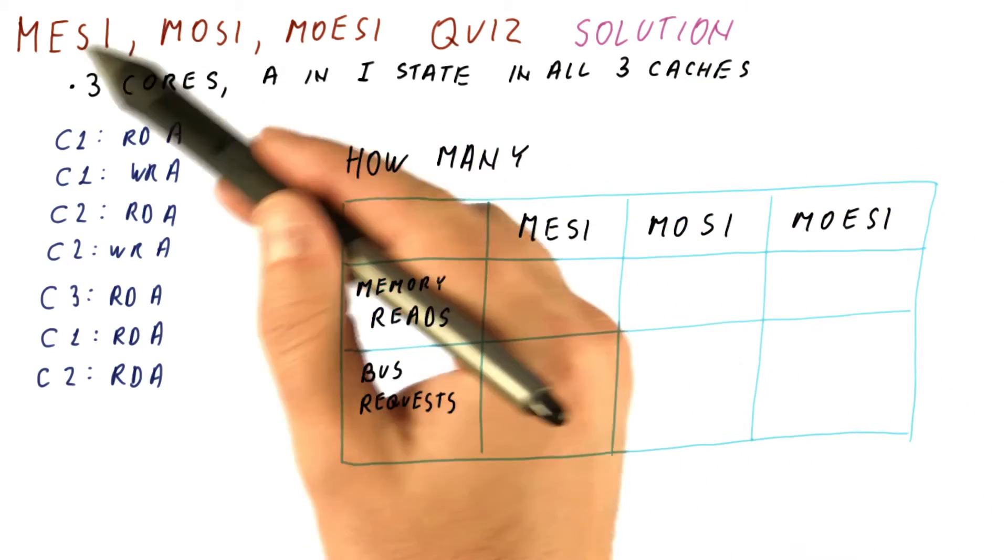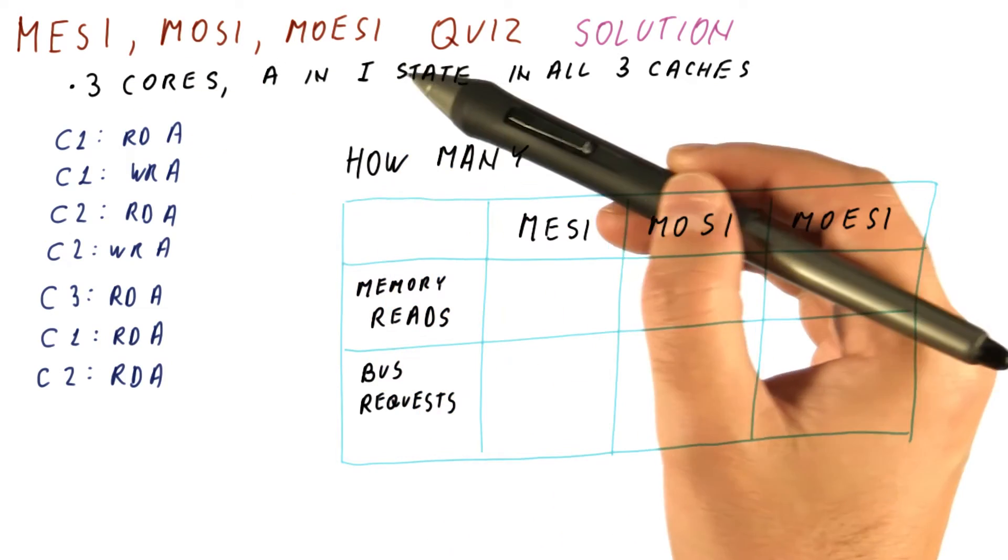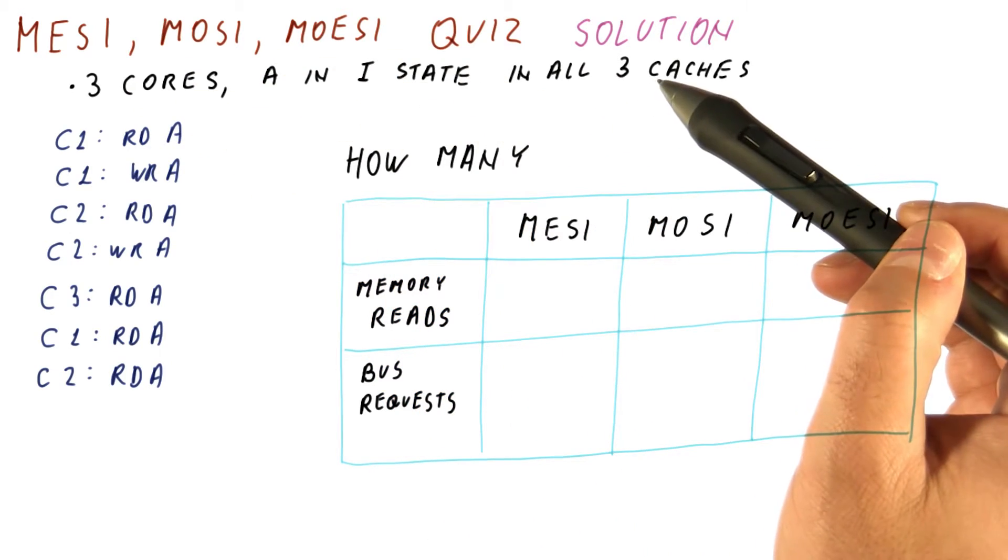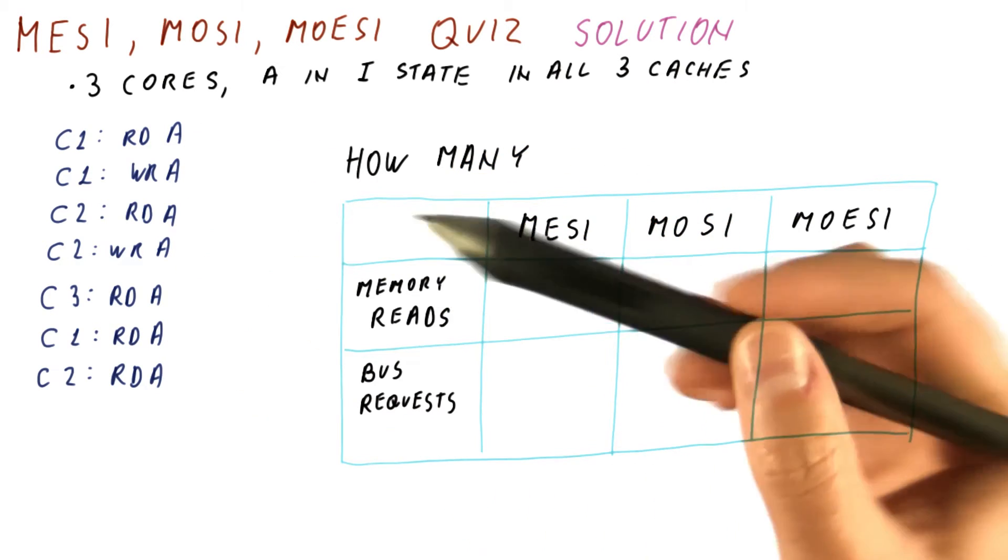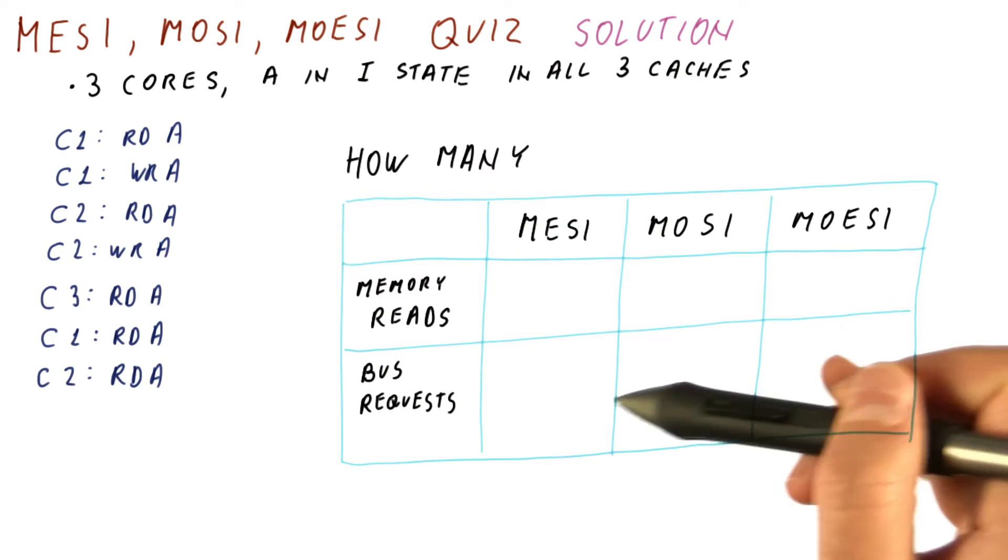Let's look at the solution for our three protocol comparison quiz, where we had three cores, a block A that starts in an invalid state in all three caches, and then cores access this block in this way. We were asked how many memory reads and bus requests do we have in each of these protocols.